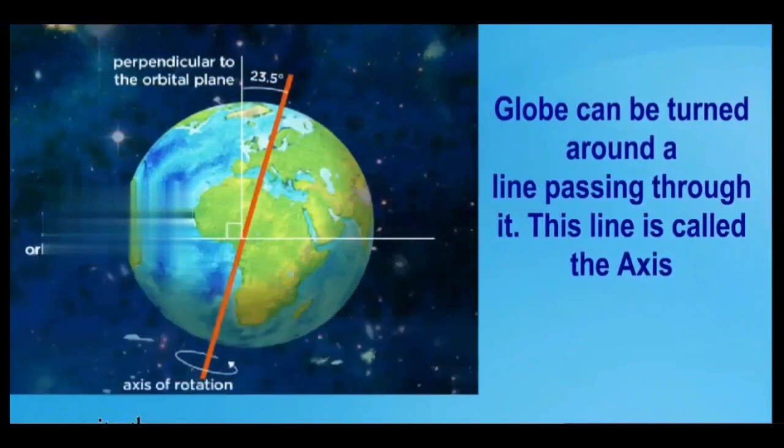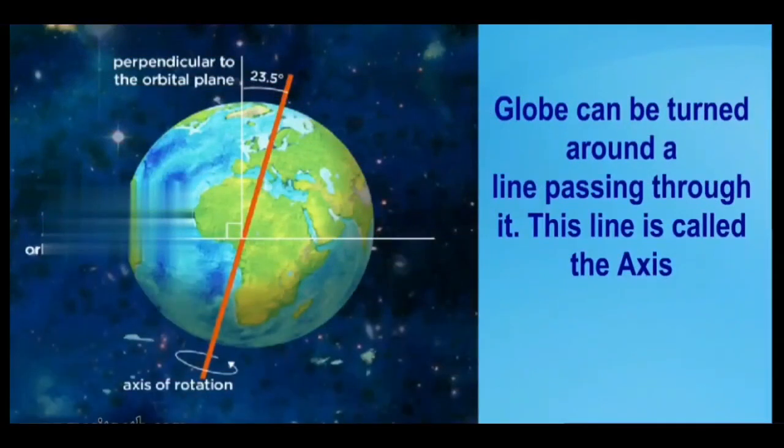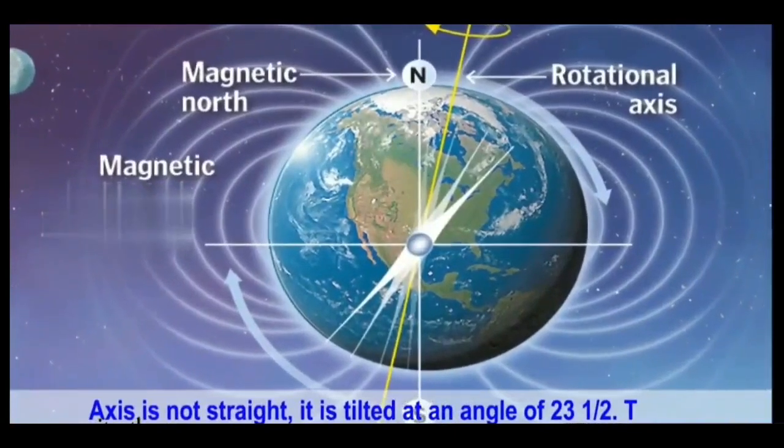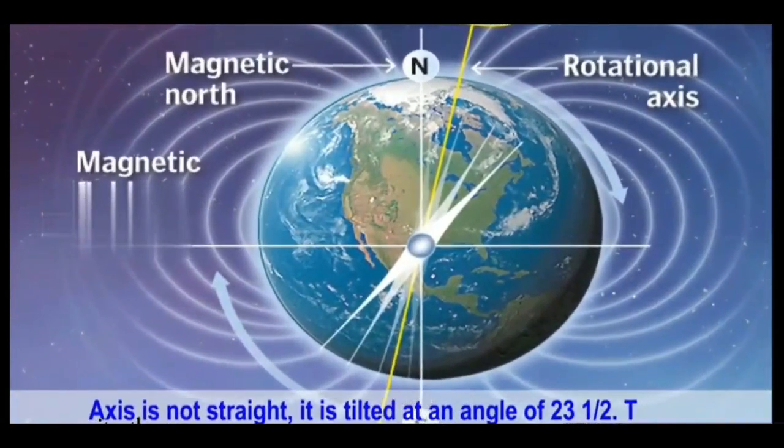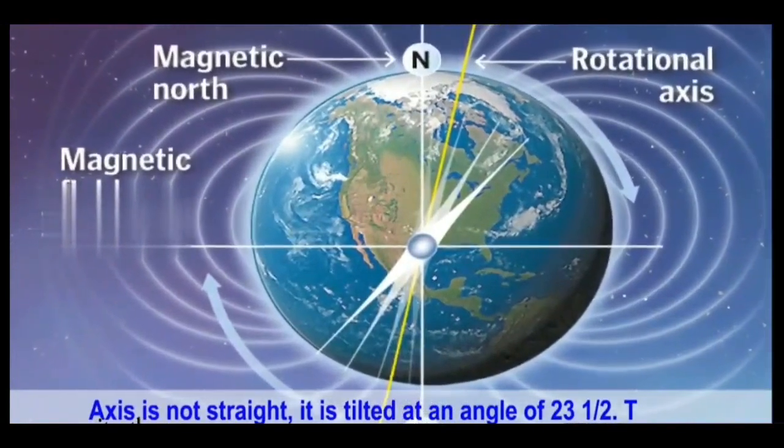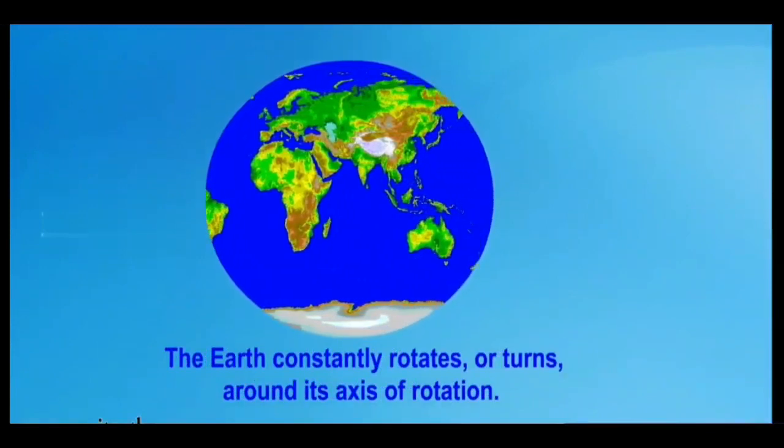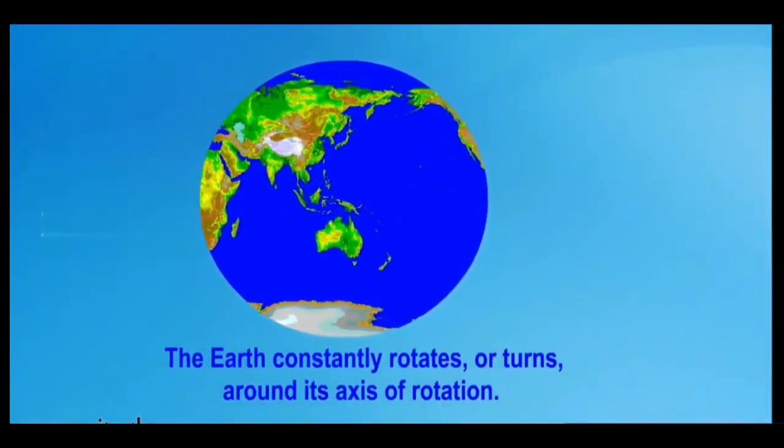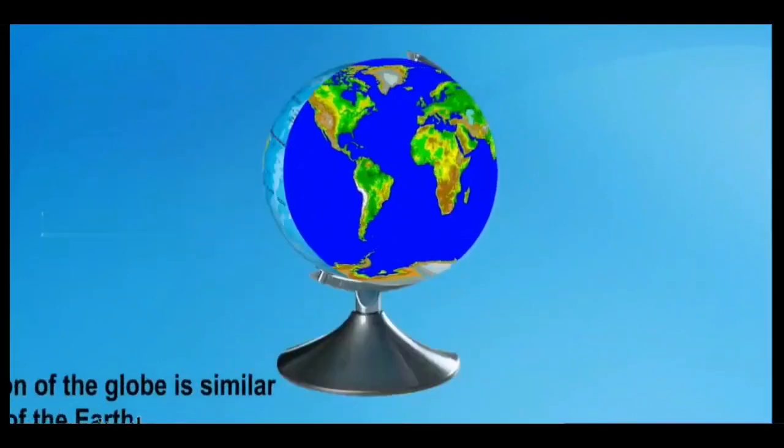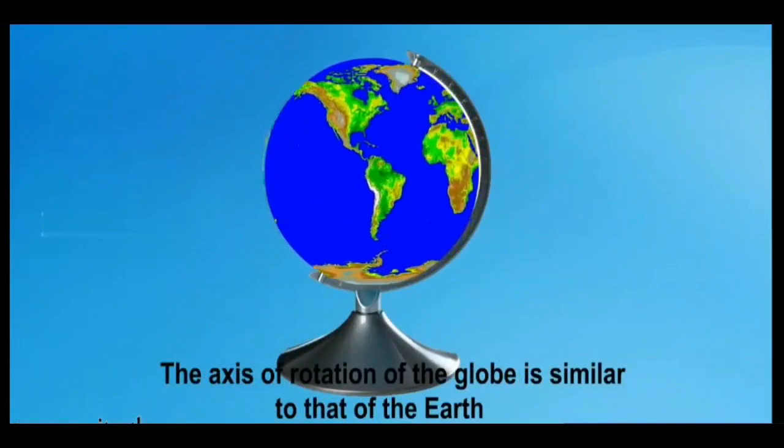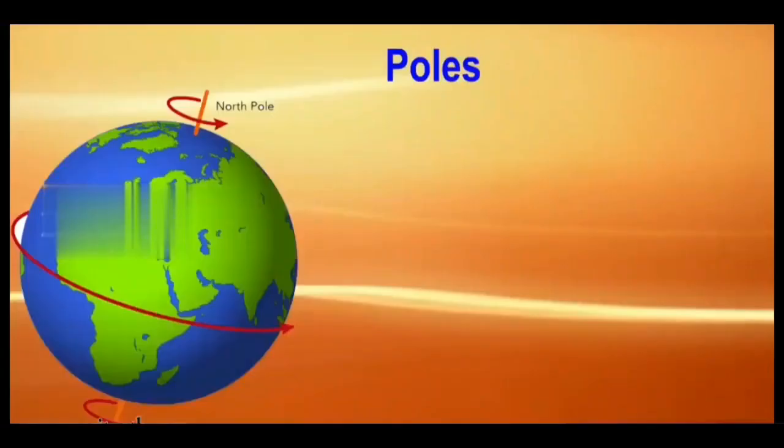Globe can be turned around a line passing through it. This line is called the axis. Axis is not straight. It is tilted at an angle of twenty-three and a half. The earth constantly rotates or turns around its axis of rotation. The axis of rotation of the globe is similar to that of the earth.